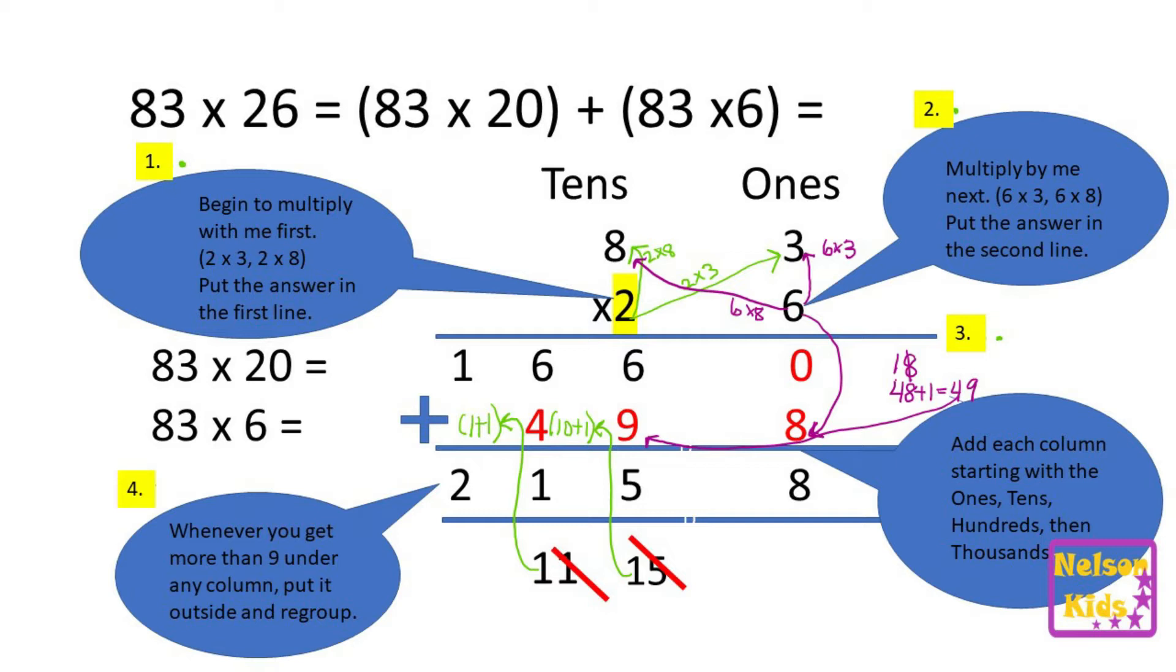For example, 83 x 26 can be broken up into 83 x 20 add 83 x 6. It is important to understand that any number that multiplies by 10 or any number from the grouping of tens will end with one zero.